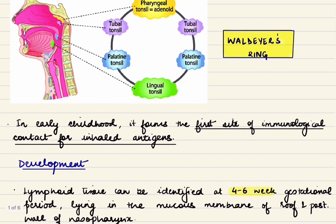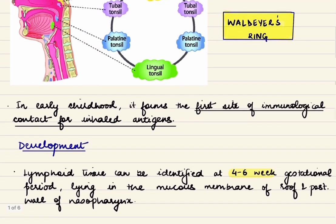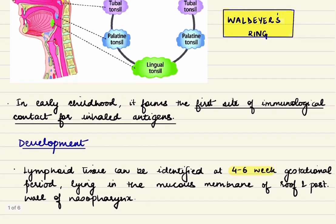In early childhood, the adenoid forms the first site of immunological contact of inhaled antigens.